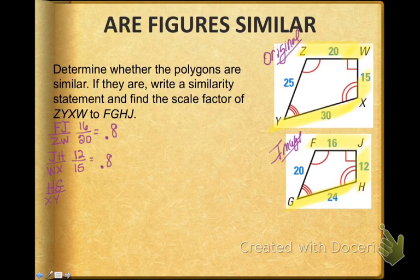Now let's look at HG and XY, and when I put numbers to that, again I get 0.8. So I'm seeing that all these sides are proportional, but let's just check the very last one, GF to YZ. When I put numbers to that, I get 0.8 as well.